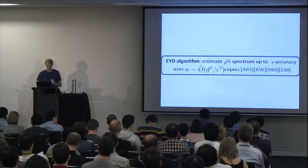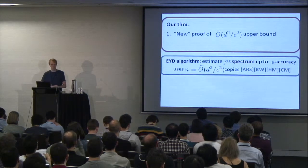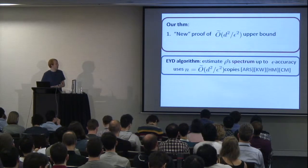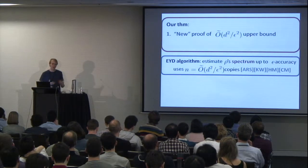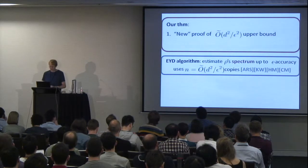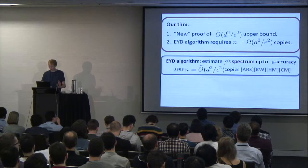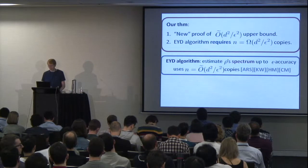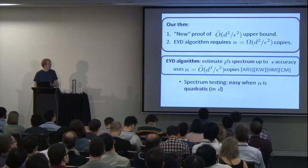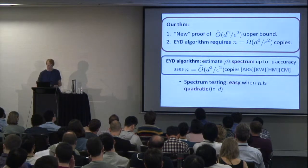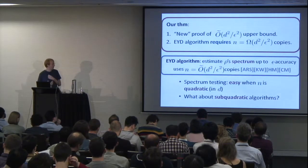Focusing on the EYD algorithm, this is where we get our first theorem. Our first result has two parts. First, we give a new proof of the upper bound — the D squared over epsilon squared upper bound — which I say is new because part of it does not overlap with other proofs and is conceptually simpler and more straightforward. We complement this with a lower bound showing that this particular algorithm does require D squared over epsilon squared copies of the mixed state. So if you want, there might be another algorithm that does better, but this algorithm requires a quadratic number of copies. Since we can estimate the spectrum using a quadratic number of samples, spectrum testing is easy using a quadratic number of copies — so the question is whether sub-quadratic algorithms exist.